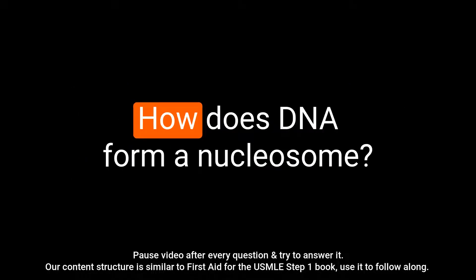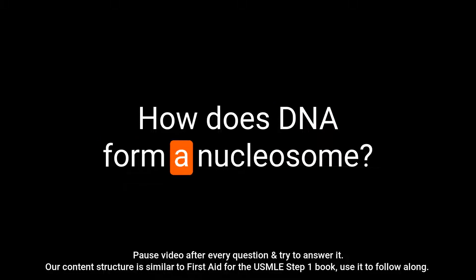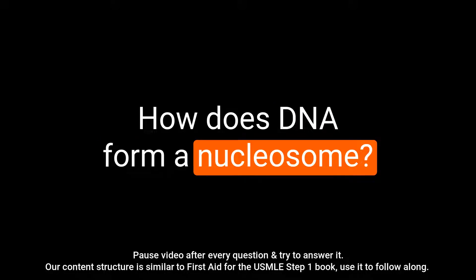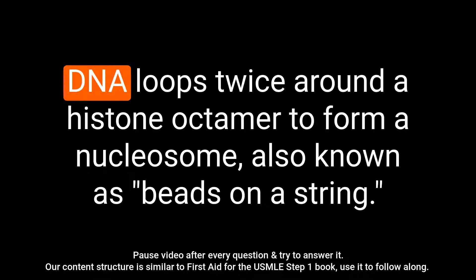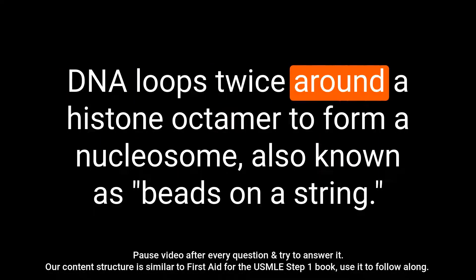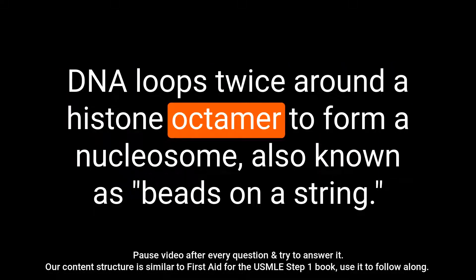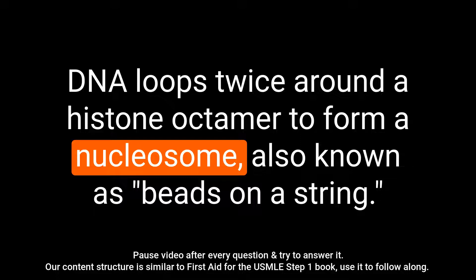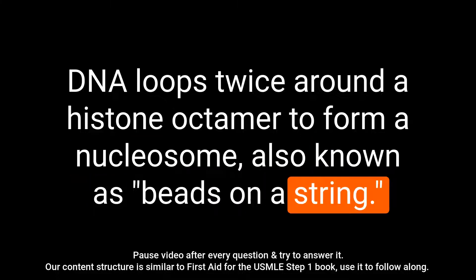Question: How does DNA form a nucleosome? Answer: DNA loops twice around a histone octamer to form a nucleosome, also known as beads on a string.